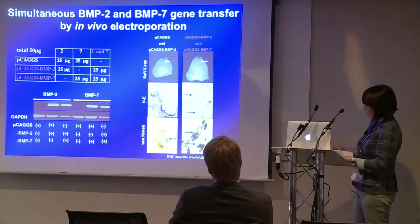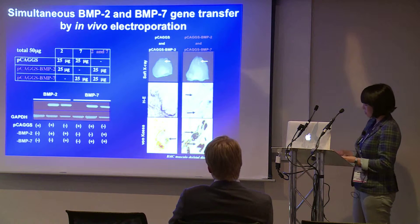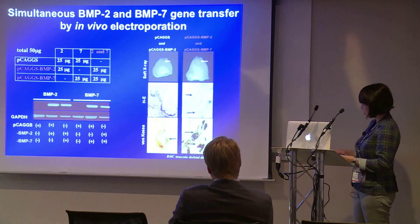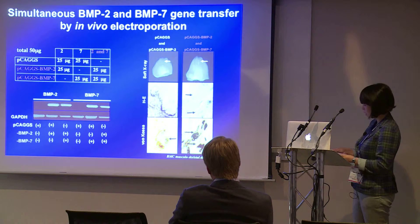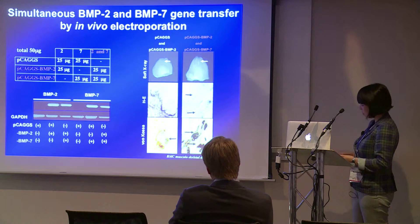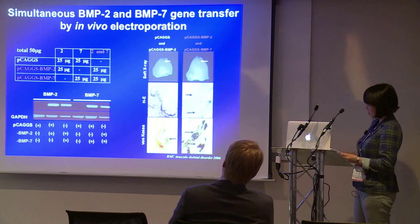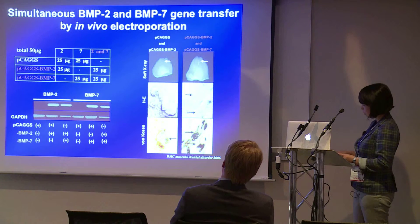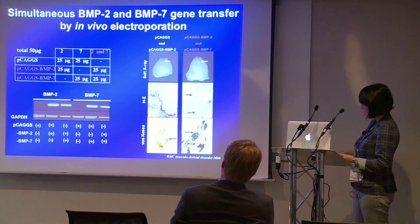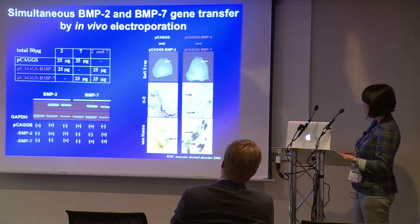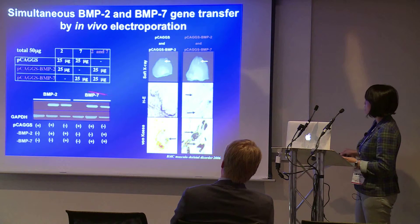Based on our in vitro study, we examined whether in vivo electroporation with equal doses of BMP2 and BMP7 genes was effective for bone formation. This slide shows skeletal muscles that received simultaneous and direct gene transfer of BMP2 and BMP7 genes. In vivo electroporation could co-express both BMP2 and BMP7 messenger RNA.